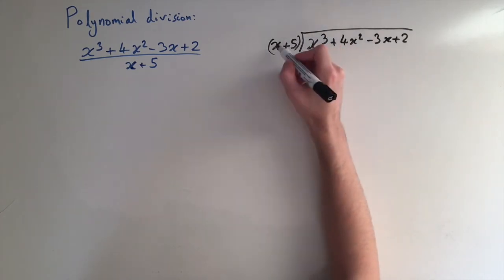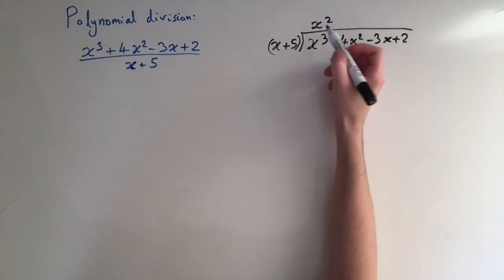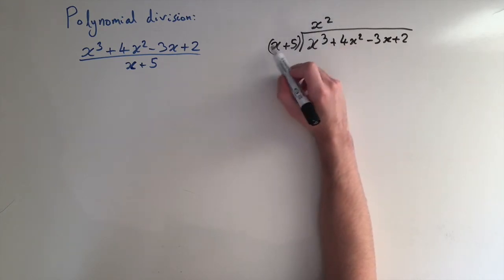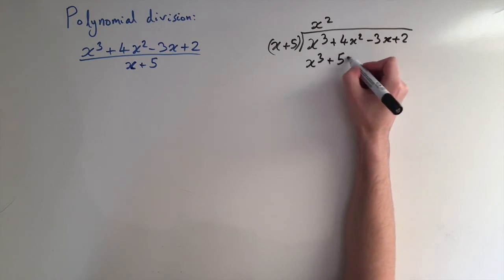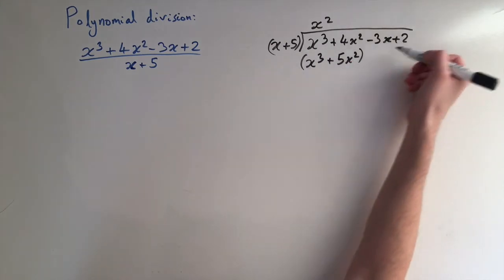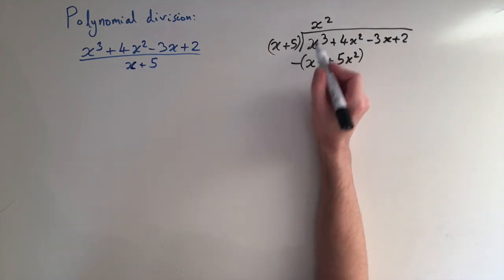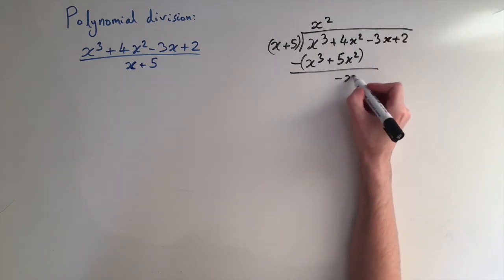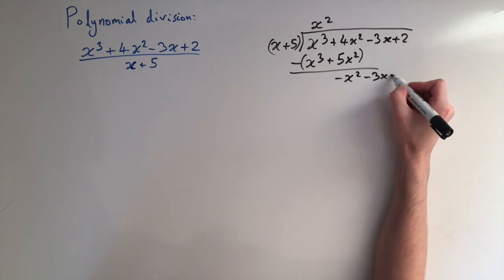Using our method, we take the leading term x and divide it by the leading term of this polynomial. So x cubed divided by x is just x squared. Then we need to balance what's left over, so we multiply x squared by this term, giving us x cubed plus 5x squared. Then we subtract this from the line above, which means the highest power cancels, leaving us with minus x squared minus 3x plus 2.